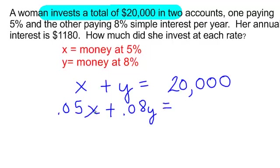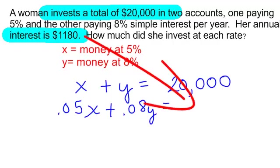That is my interest, the interest of my first place plus the interest of my second place. And it says the annual interest is 1,180. So the interest at my first place plus my second place should be 1,180.